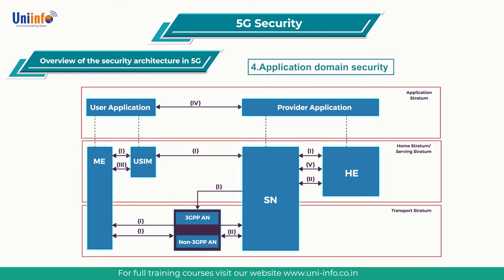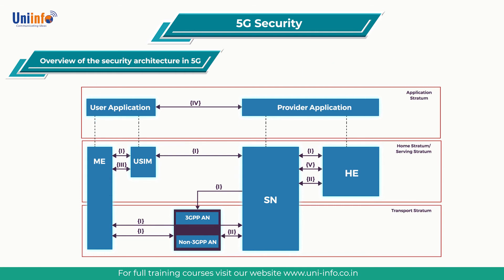Application domain security is the set of security features that enables applications in the user domain and in the provider domain to exchange messages securely. Application domain security is out of scope of the present document.